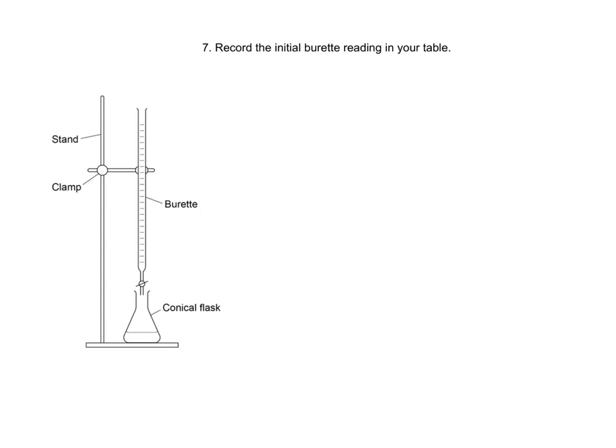Record the initial burette reading in your table. Add the sodium hydrogen sulphate to the conical flask, slowly, making sure you're adding it drop-wise as you approach the end point. The end point for this titration will be a colour change from pink to colourless.